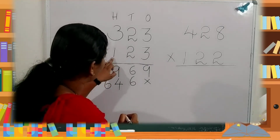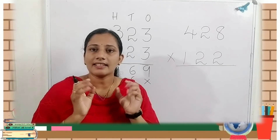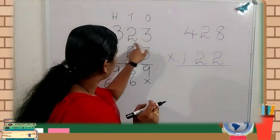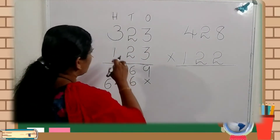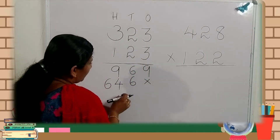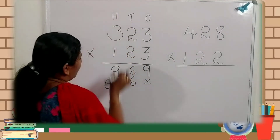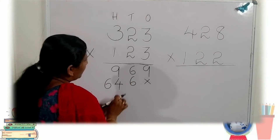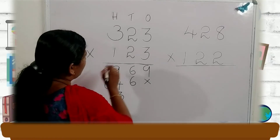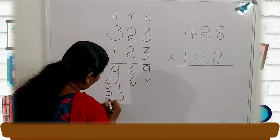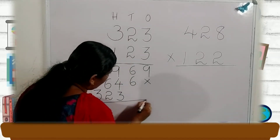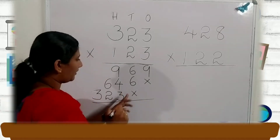One more number remains. Which is that? Yes, that is one. Now that one will multiply these three digits. First, one into three — where do we write that? Yes, in the hundreds place. One threes are three. Next, one twos are two. One threes are three. Here there are no numbers, so just give the symbol of X.